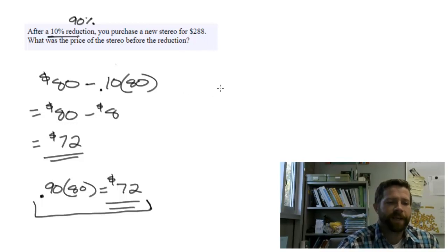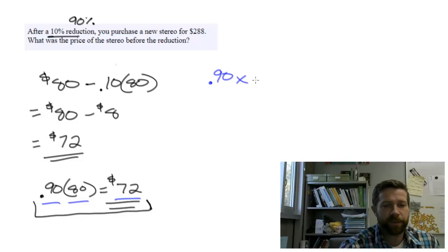Looking at this, we have the 90%, the original price of $80, and the sale price. We're going to rewrite that, except we don't know the original price. We'll use a variable, x, for that. The equation is: 90% times the original price equals $288. That's the equation you need to solve this problem.